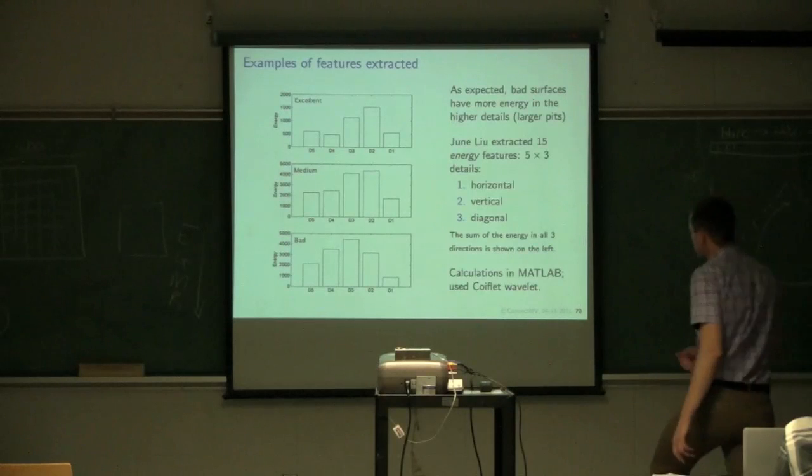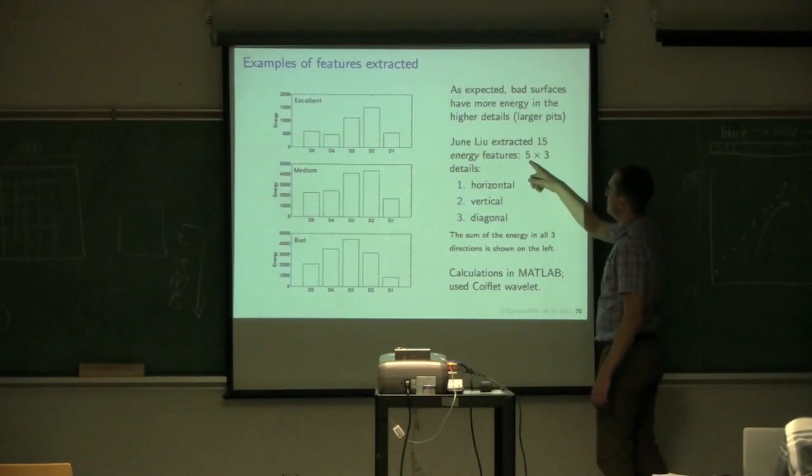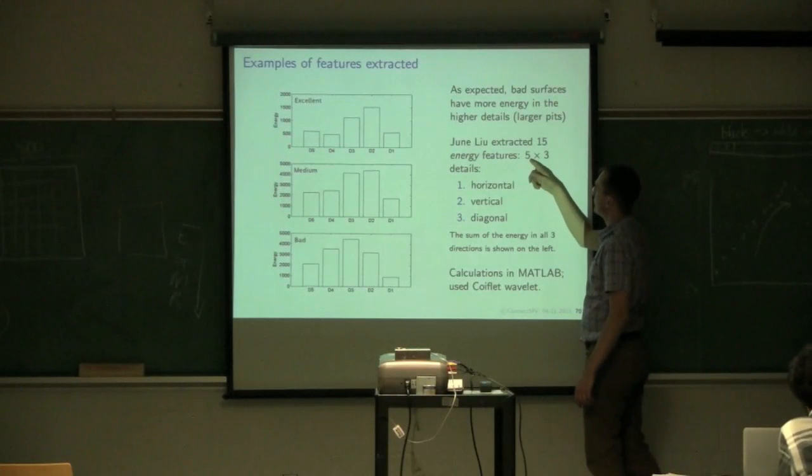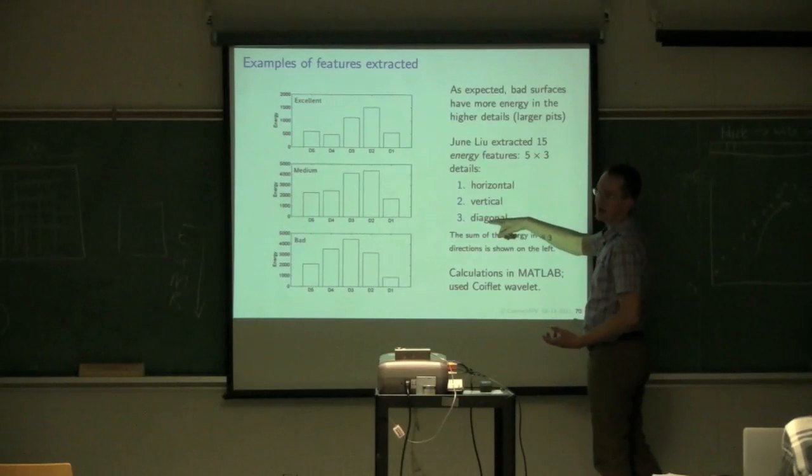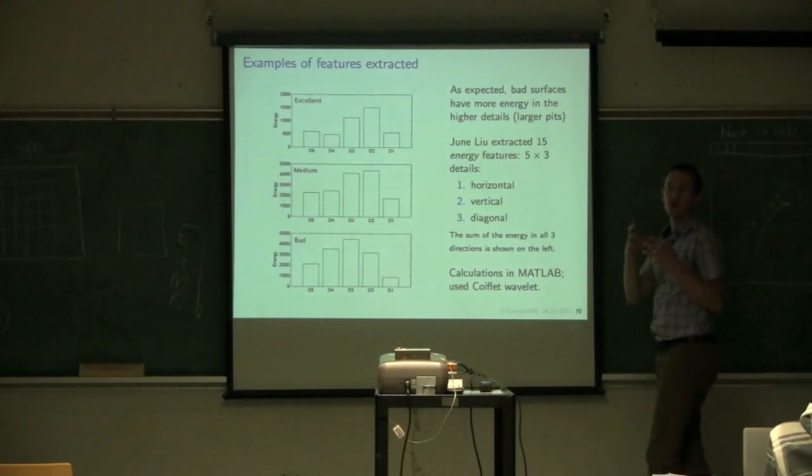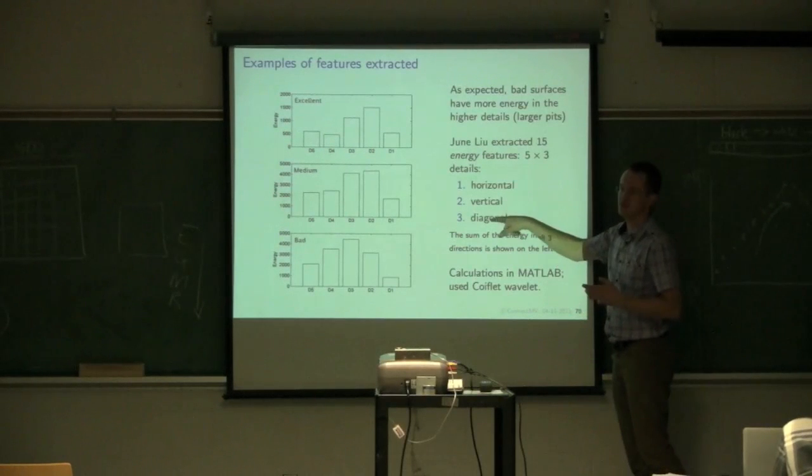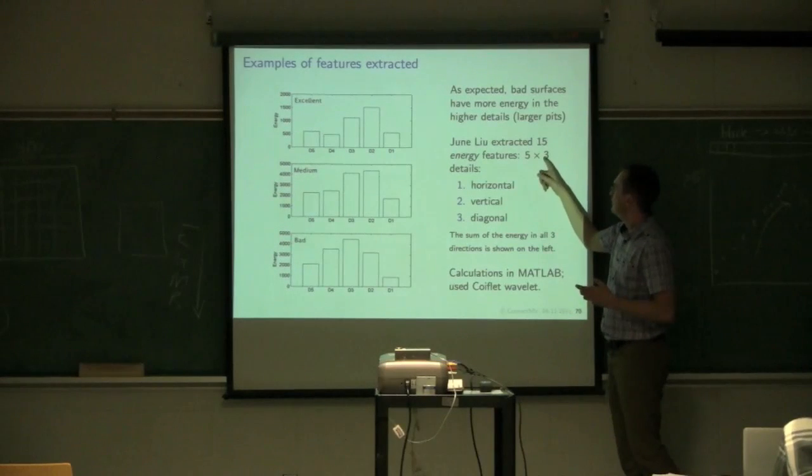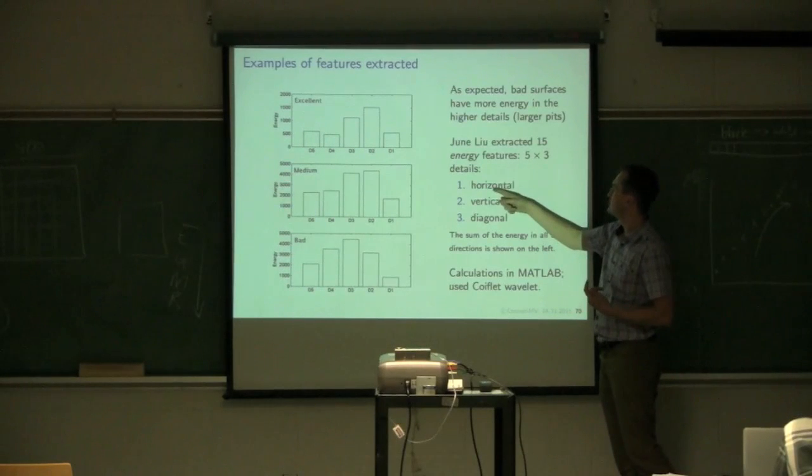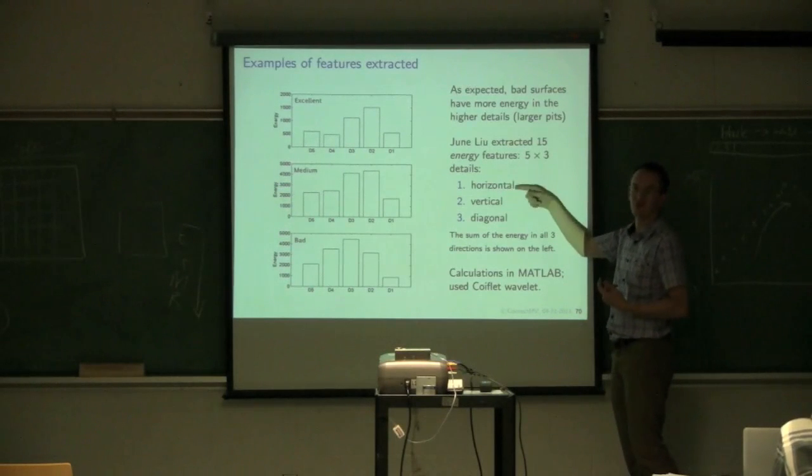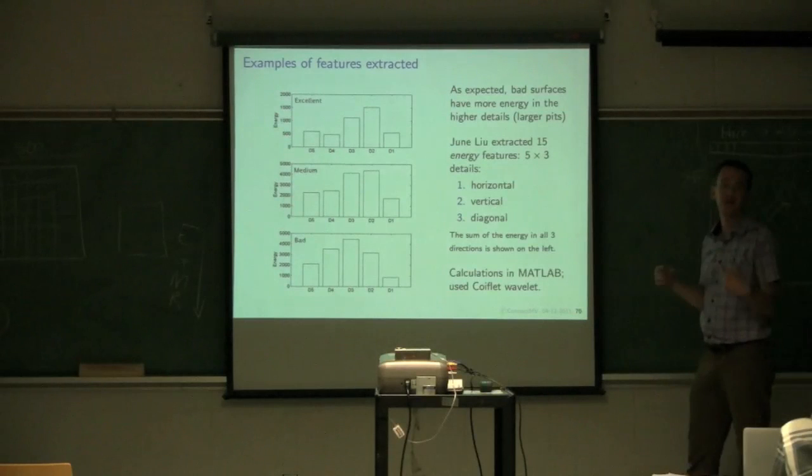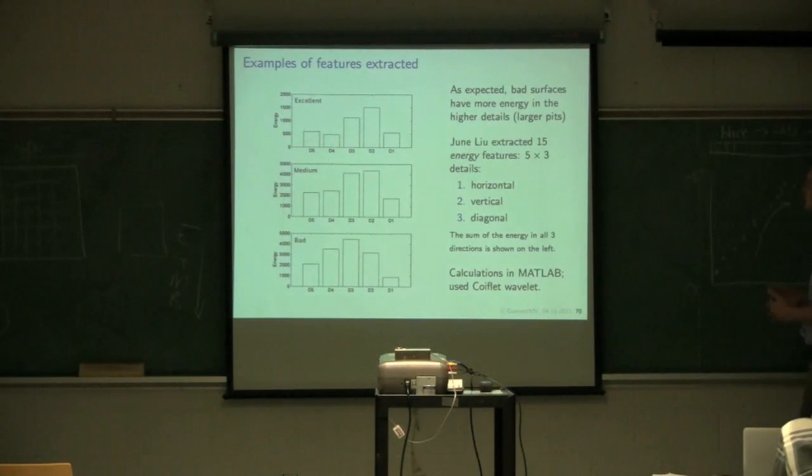So, Jude calculates five detailed images, and each of those detailed images consist of a horizontal, vertical, and diagonal detail. But Jude's original calculation, he's got the energy in the horizontal image for D1, energy in the horizontal image for D2, D3, D4, D5. Same for vertical, same for diagonal. So, 15 features per image are extracted.